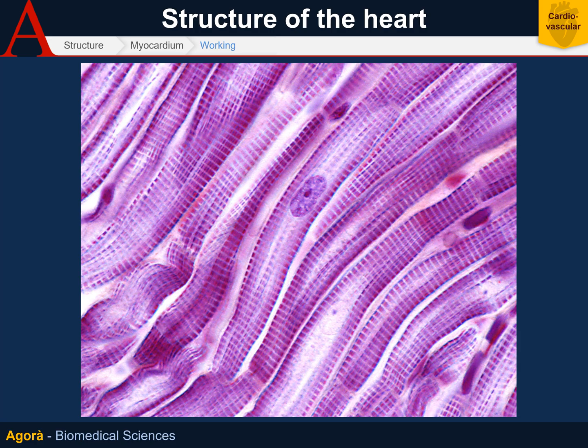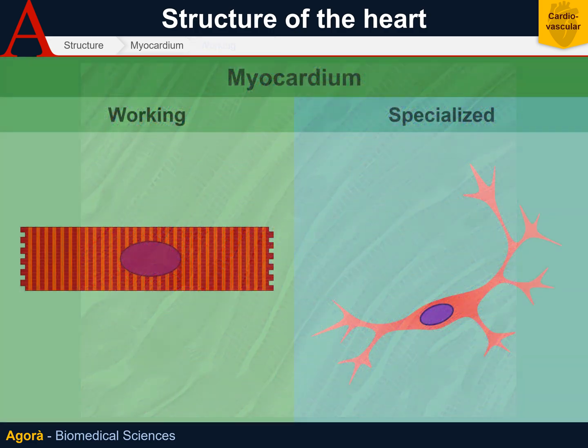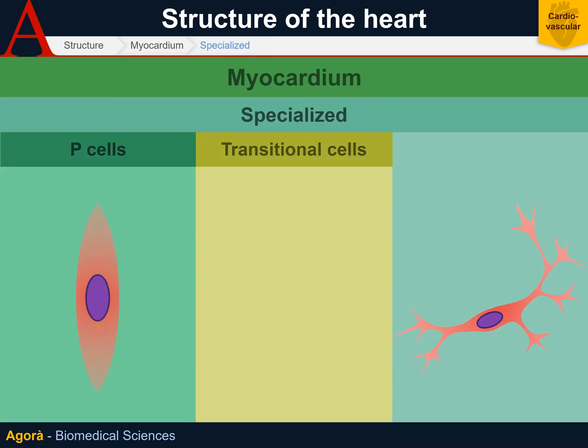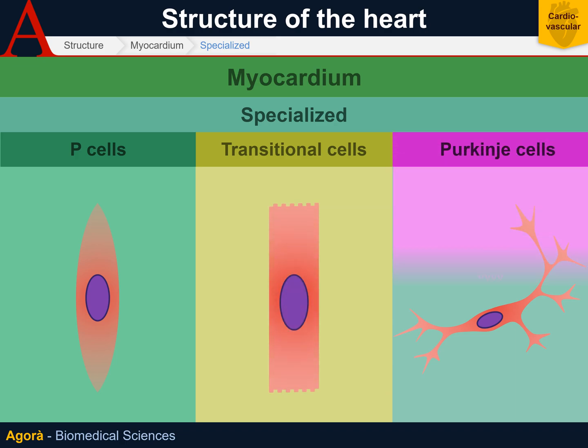Now let's talk about the specialized myocardium, which is composed of a series of cells that create and conduct the impulse. The P cells, or pacemaker cells — about which we talked in the previous video — are fusiform and can be found in the nodes.